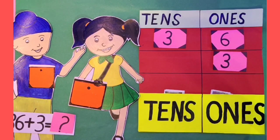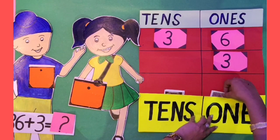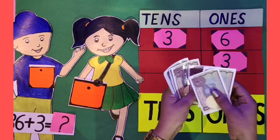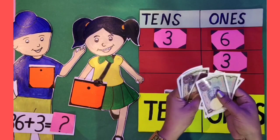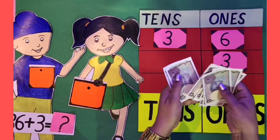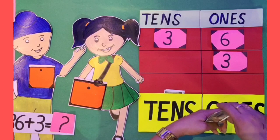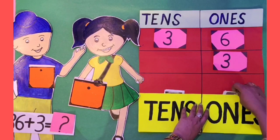Now, kids, let's count all 1 rupee notes. 1, 2, 3, 4, 5, 6, 7, 8, 9. That means 9 ones.